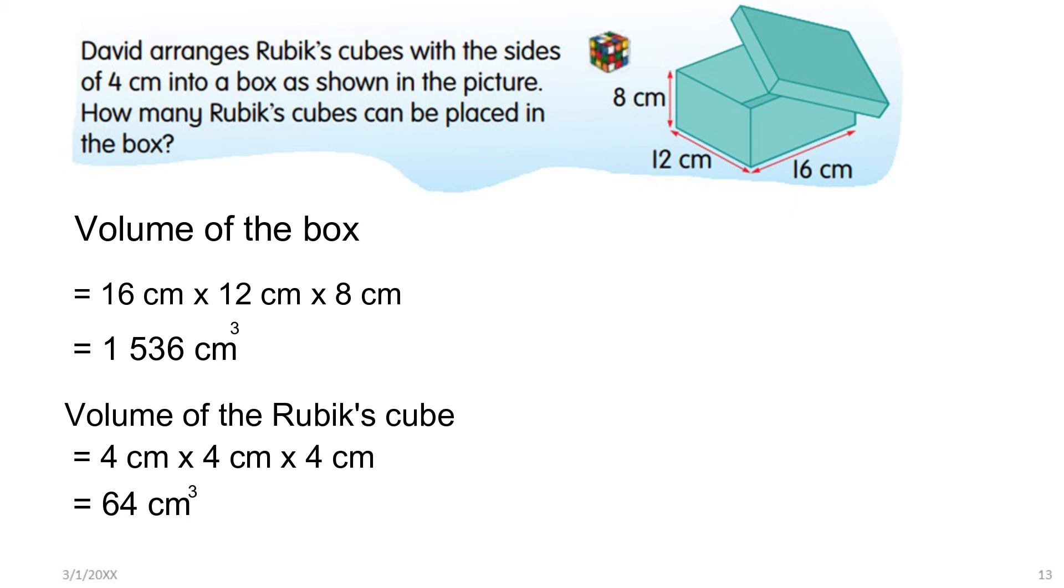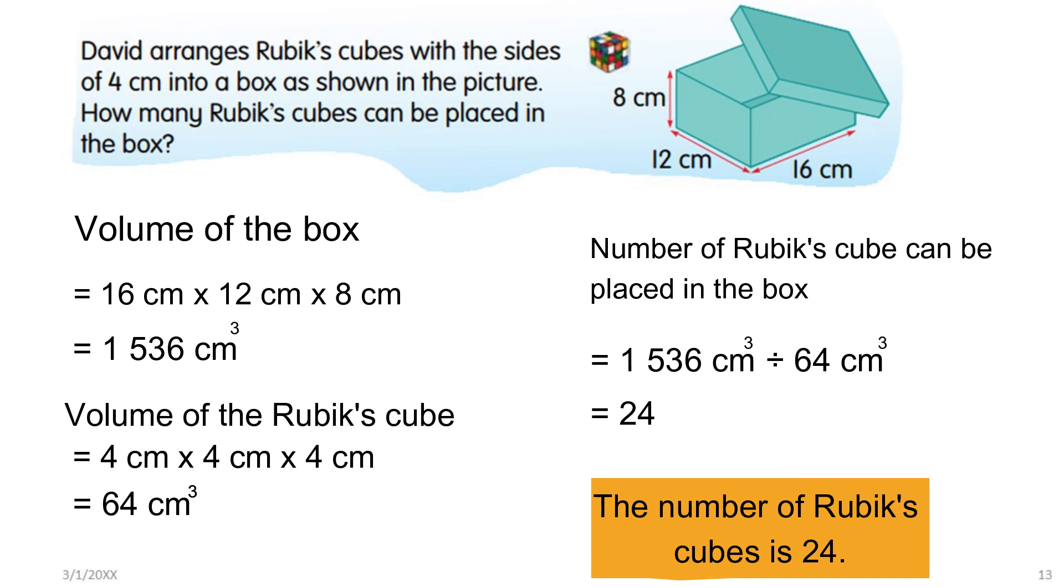Now to find the number of Rubik's cubes, we need to divide 1,536 by 64. When you perform the division, you will get 24. So the number of Rubik's cubes is 24.